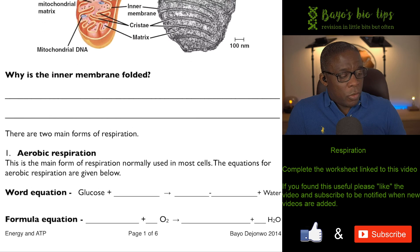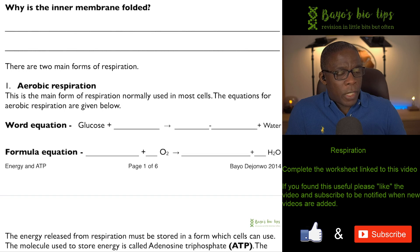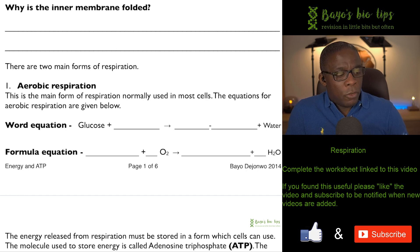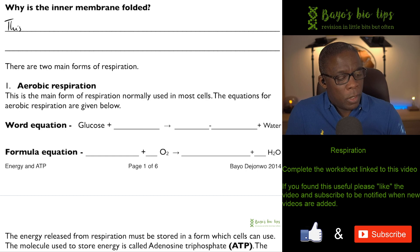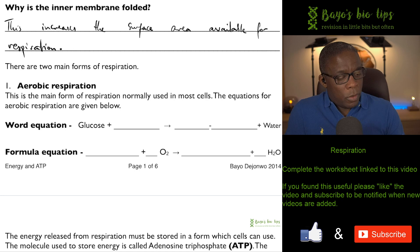Within the structure of the mitochondrion you can see folds — the inner membrane is folded repeatedly. Think about why the inner mitochondrial membrane might be folded. Well, the inner mitochondrial membrane is folded to form cristae, which increase the surface area available for respiration.